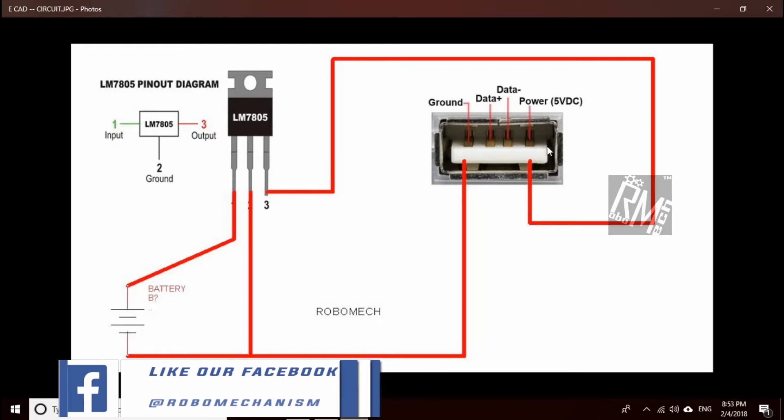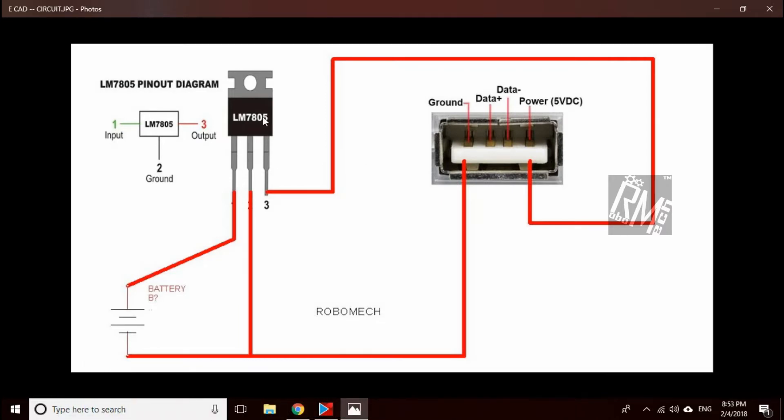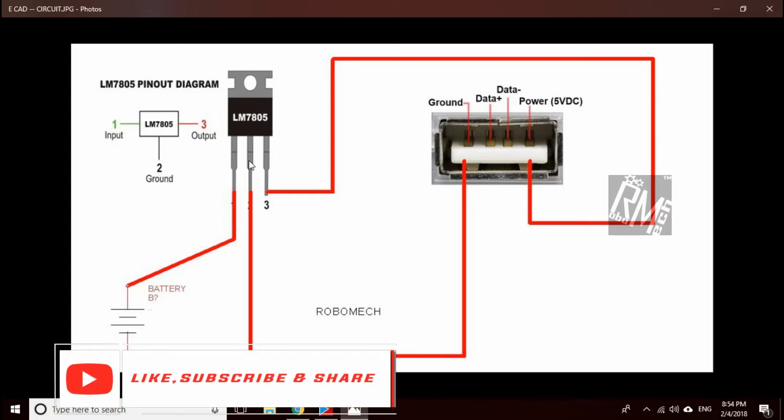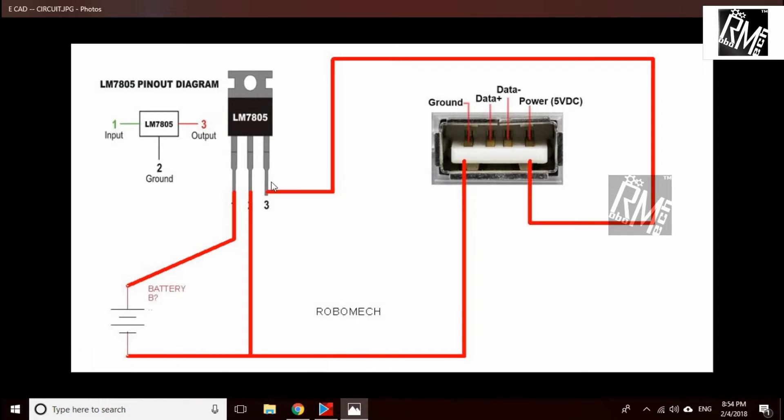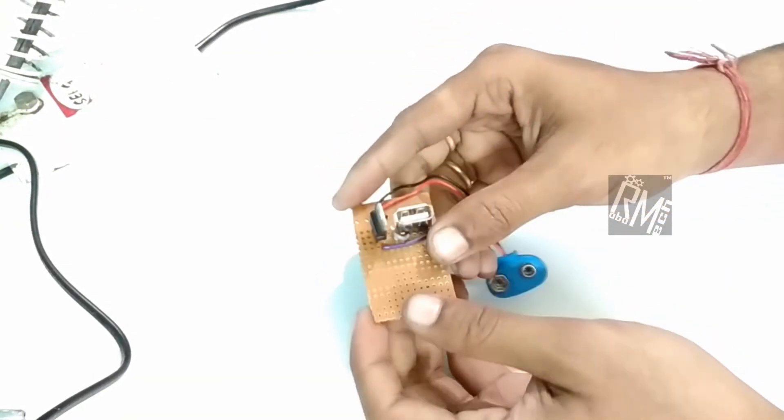The job of this LM7805 is to convert 9 volts from the battery to 5-volt regulated supply so that we can use it on our devices. As you can see, I have connected all the circuits according to the diagram I just showed you.